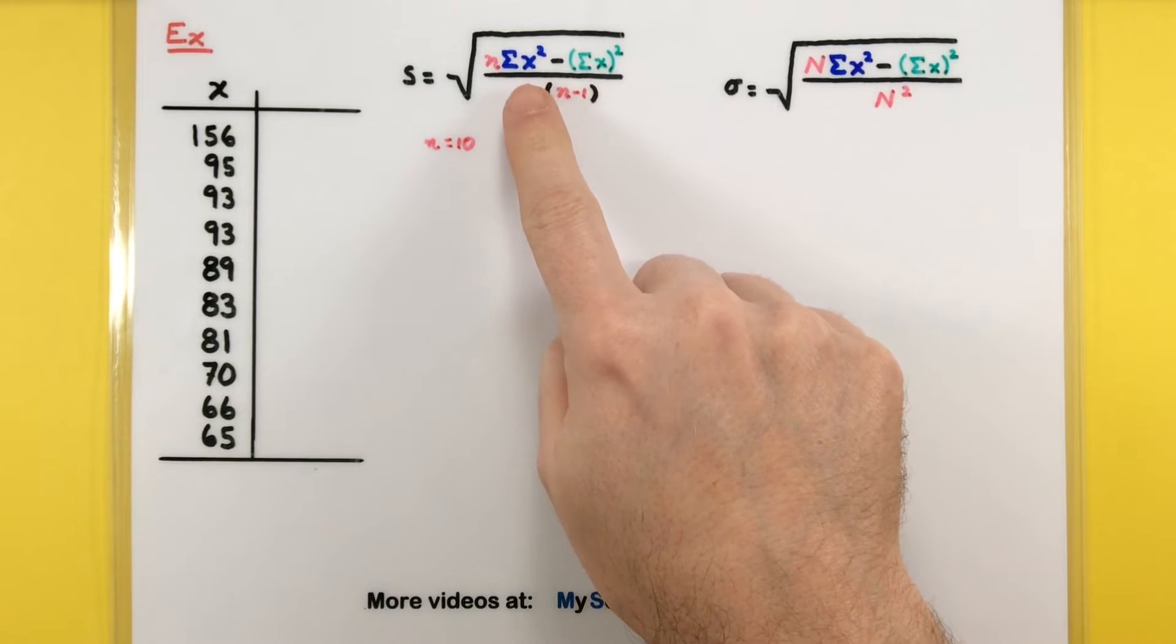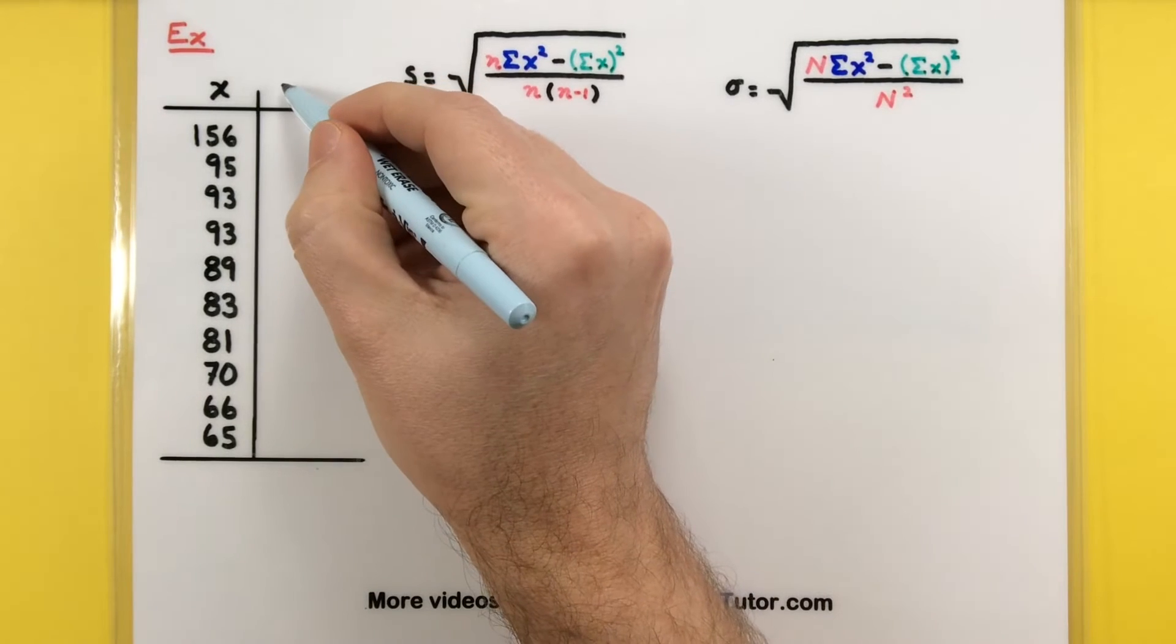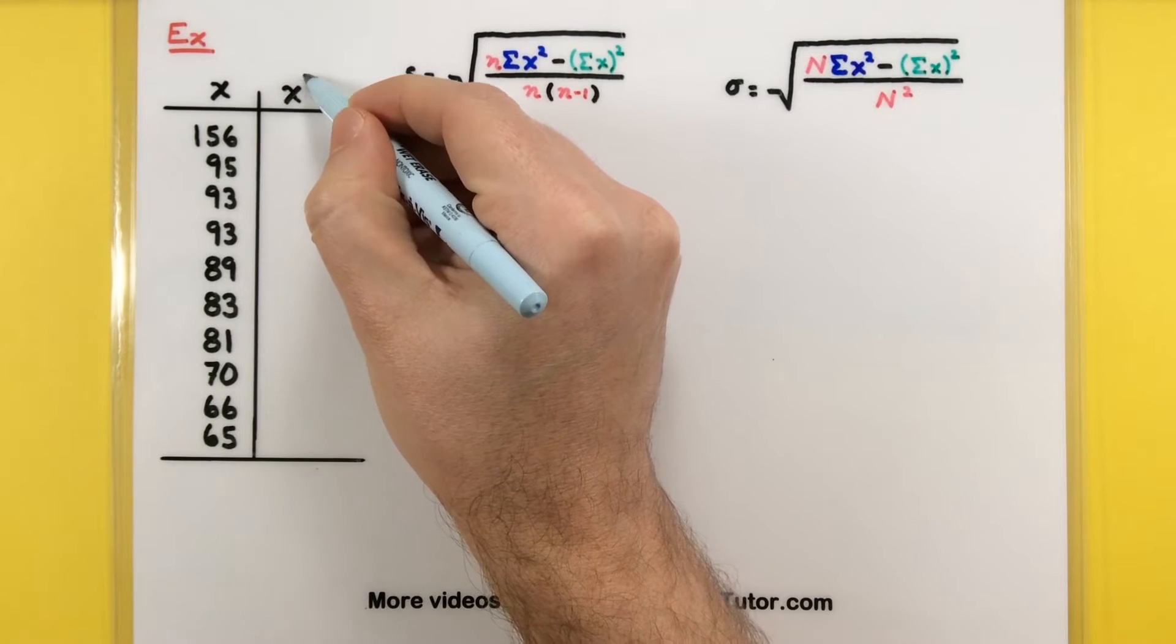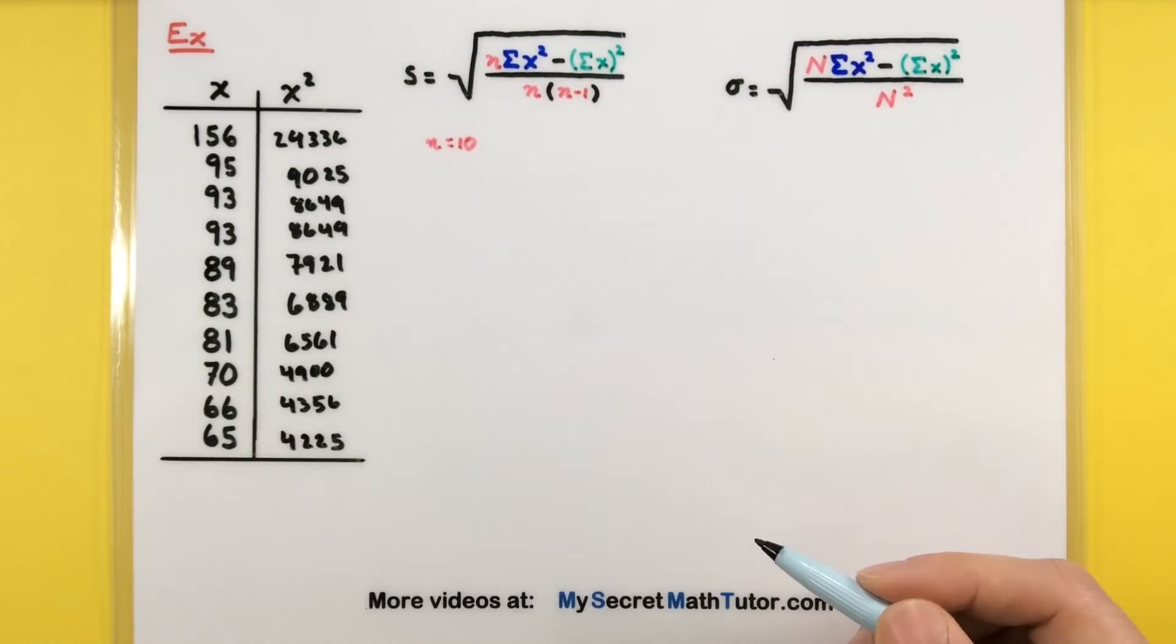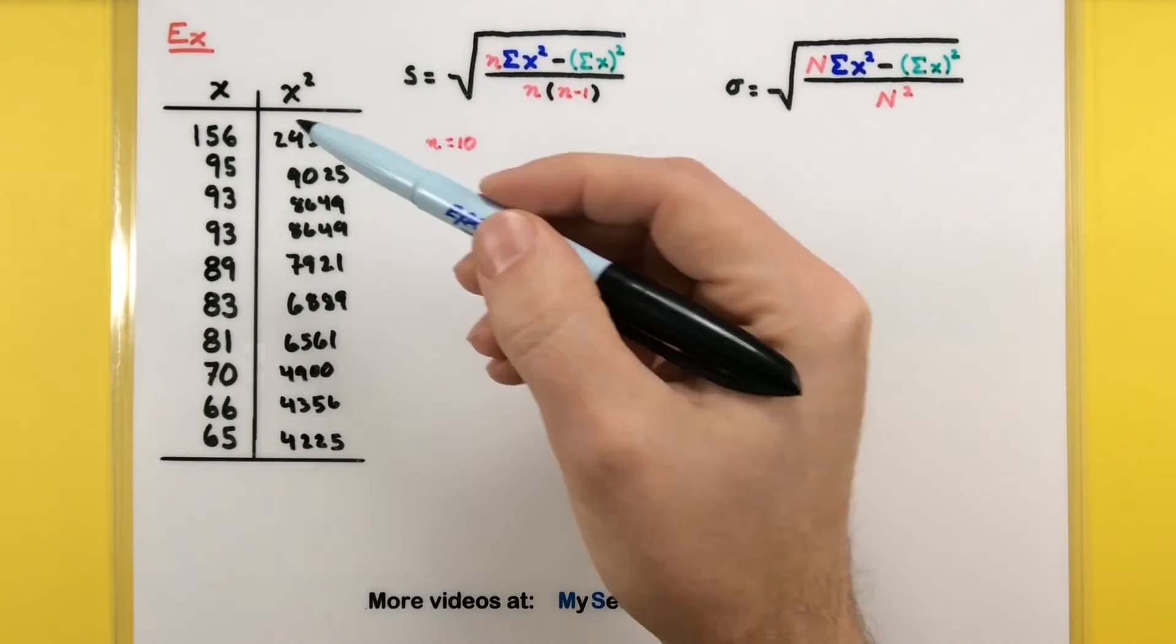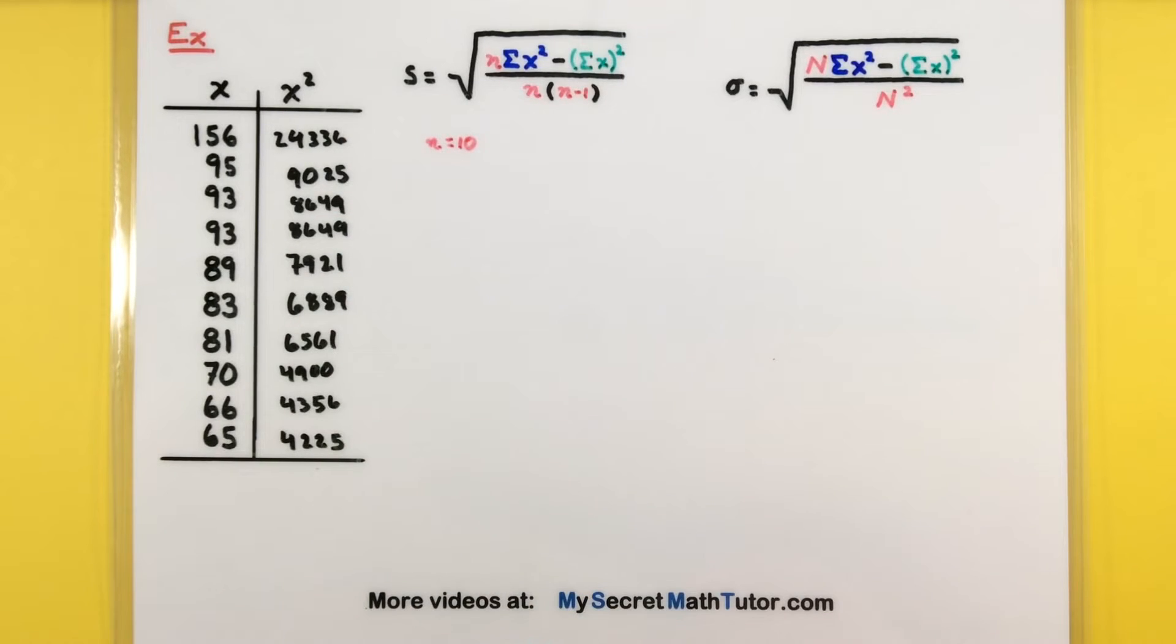Alright, moving on. We can see that this is the sum of all of the values of x squared. So, there's actually two things we need to do. First, we need to find all of the values squared, and then we'll add those up. Now, this can take a little bit of time, and it's probably a good idea that you have a calculator to take care of these individual steps. I'm going to use my calculator and quickly move through these.